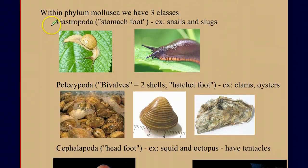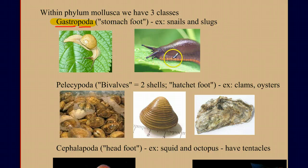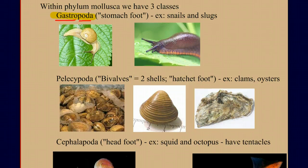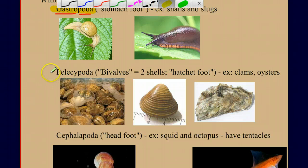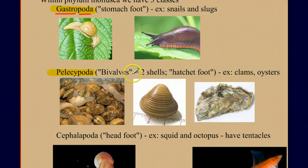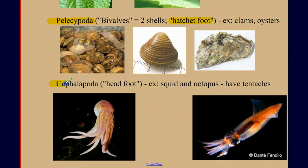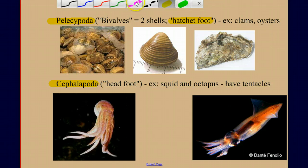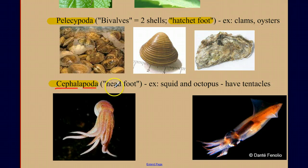Within the phylum Mollusca, we have three classes. First, Gastropoda — the word gastropoda means stomach foot: gastro means stomach, poda means foot. The gastropods are the snails and slugs, and it makes sense to call them stomach foot because they move along on their stomach. Our next group are the pelecypods, or the bivalves, meaning two shells. Pelecypoda means hatchet foot. Examples are clams and oysters, which have two shells and a hatchet foot used to burrow into the mud. Finally, our third group is the cephalopods — cephala means head, poda means foot, so head foot. These are the squid and octopus, and their muscular foot has been modified as grasping tentacles.